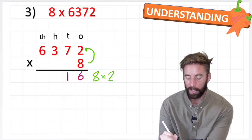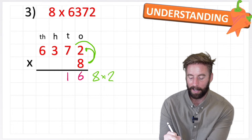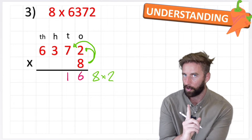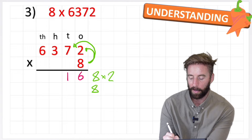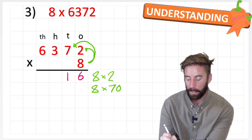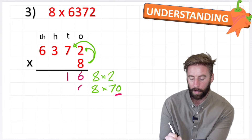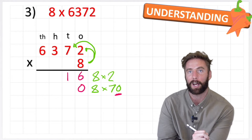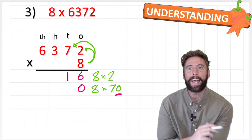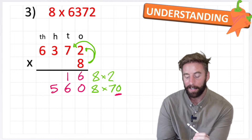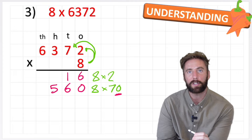My next question is 8 times — not just 7 — 70. So 8 times 70. How many placeholders are in 70? One. So I put the placeholder in place and just do 8 times 7, which is 56. So my answer to 8 times 70 is 560.